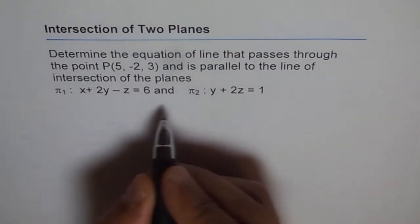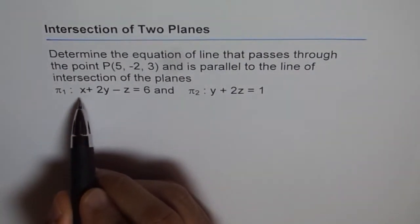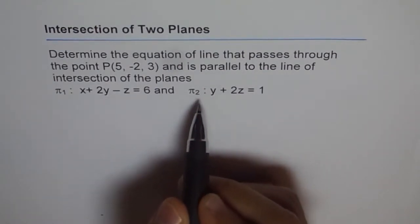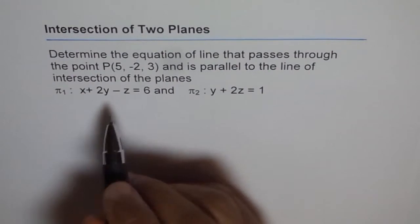So what is the direction vector here? The normal of plane 1 is 1, 2, and -1 and here it is 0, 1, and 2. Let's do the cross product.